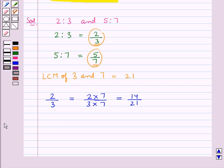Then, consider the other fraction which is 5 upon 7. To make its denominator equal to 21, we will multiply its numerator and denominator by 3. And this is equal to 15 upon 21.